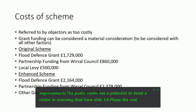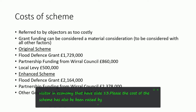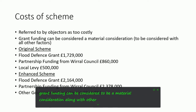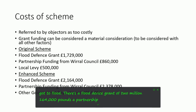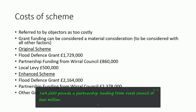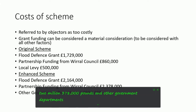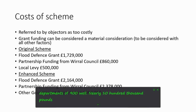The cost of the scheme has also been raised by a number of objectors. Grant funding can be considered to be a material consideration along with other factors. In this instance, there's a flood advance grant of £2,164,000, partnership funding from Wirral Council of £2,378,000, and other government department monies of approximately £1 million.